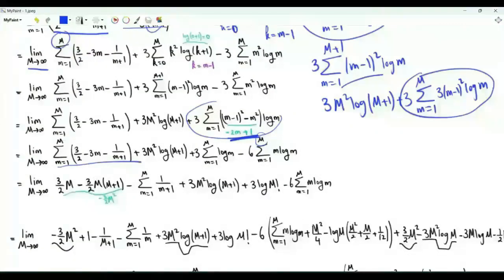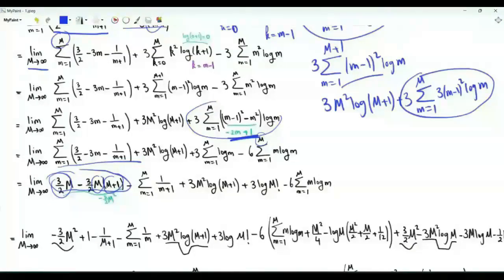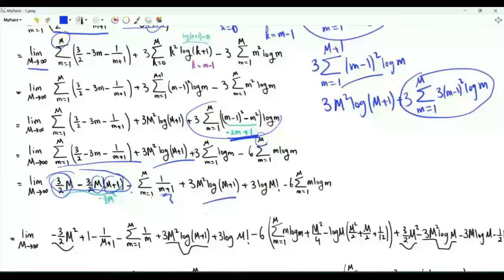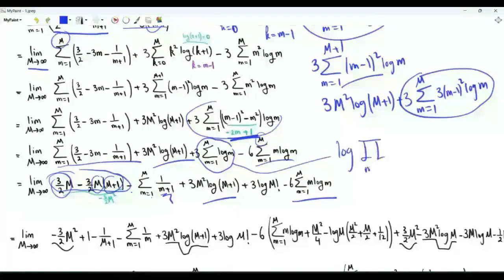Now focusing on the arithmetic part: 3/2 is added M times giving 3M/2, minus 3 times the sum of m from 1 to M, which is (1/2)M(M+1). Together these two terms equal minus 3M²/2. We also have minus the sum of 1/(m+1). And the sum of log m from 1 to M is log(M!), so the log part gives 3 log(M!).